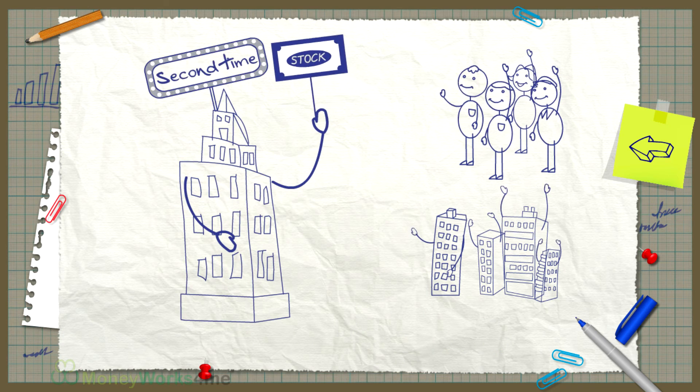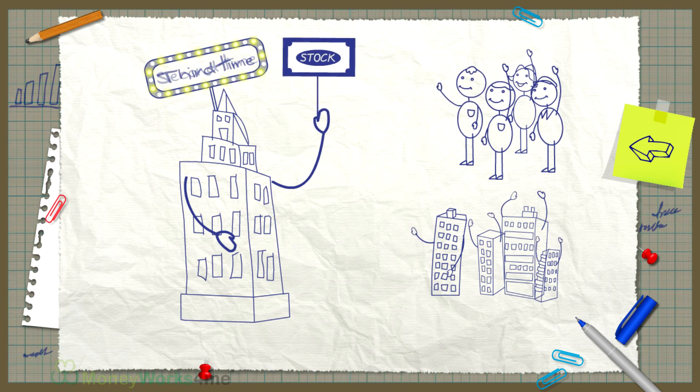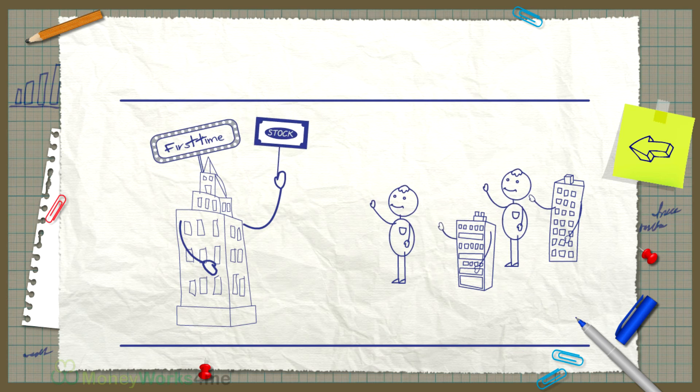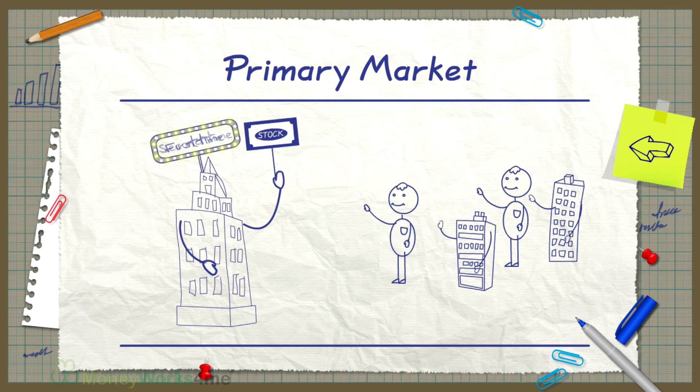If the company is approaching the public a second or a third time to sell its stock, it is known as a follow-on public offering or FPO. Both initial public offerings as well as follow-on public offerings make up the primary market.